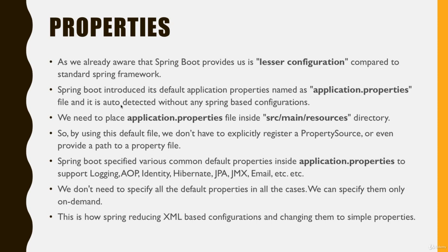The application.properties file is located in the src/main/resources directory. By using this default file we don't have to explicitly register a property source or provide a path to a property file. Spring Boot provides a lot of properties across the whole Spring ecosystem — for example, Spring Batch has specific properties, Spring Actuator has its own, JPA has its own, Tomcat has its own, Kafka, and so on. The major point is that we don't need to specify all default properties — we only need to specify them on demand, when we want to override something. This reduced a lot of XML configuration.